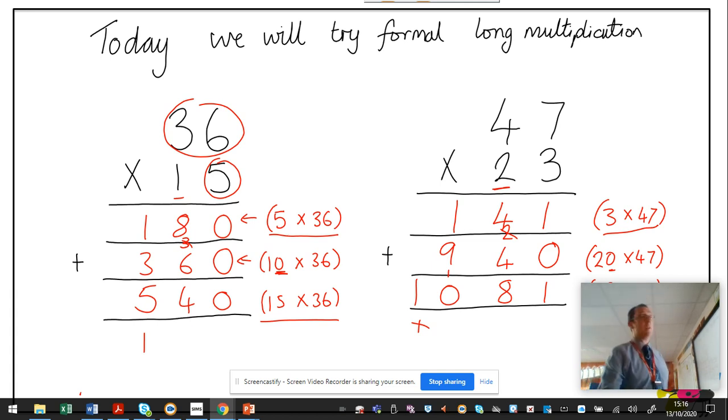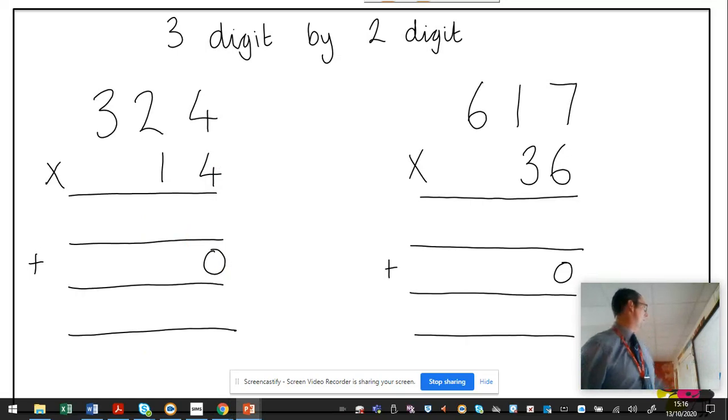Okay, welcome back. Hopefully you've had a good go at your two digit by two digits, which was the bronze task. Now we're going to have a look at the silver task, so just move this along.